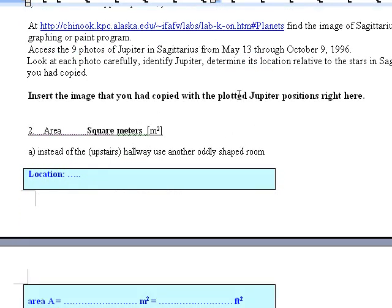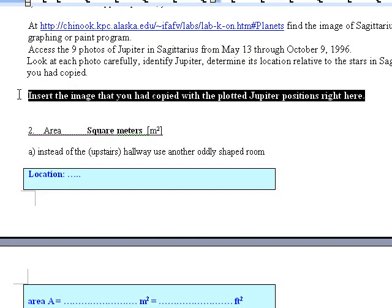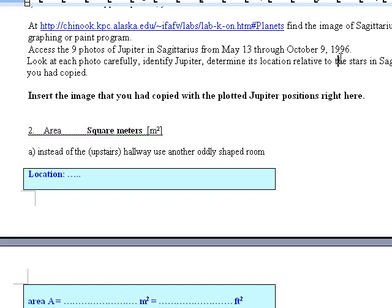And that's how you fill it in. And notice here, insert the image that you had copied with the plotted Jupiter positions right here. So you copy the image and you can do this on the computer. Each computer should have a graphics program where you can plot certain things in it.